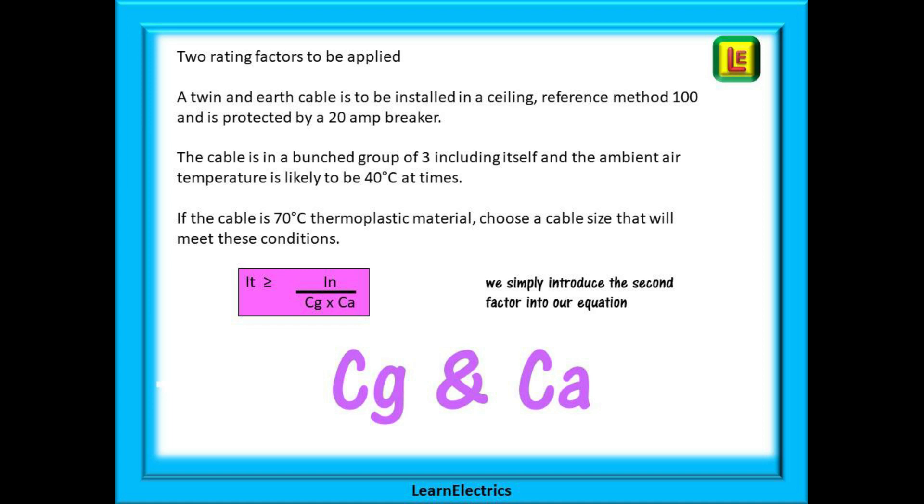A twin and earth cable is to be installed in a ceiling using reference method 100 and it is protected by a 20 amp breaker. The cable is in a bunched group of 3 including itself and the ambient air temperature is likely to be 40 degrees centigrade at times. If the cable is 70 degree thermoplastic material choose a cable size that will meet these conditions. It is the same formula as before except that the breaker size IN is now divided by CG and CA but it is still easy.